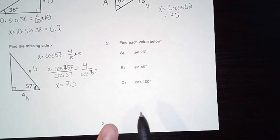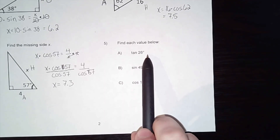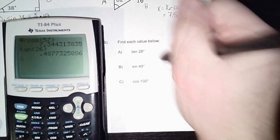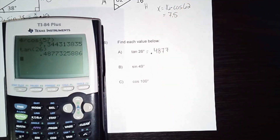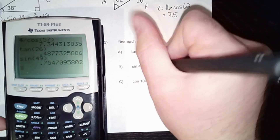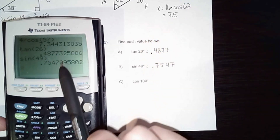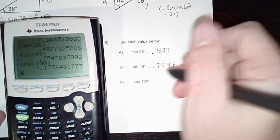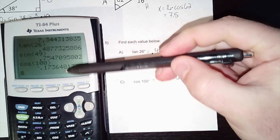For number 5, I need to find the value of each trig ratio directly using the calculator. Tangent of 26° — type it in — I'll give four decimal places. Sine of 49° equals 0.7547. Cosine of 100° gives a negative number: approximately negative 0.1736. I'm looking at the fifth decimal place to decide rounding. All three of these stayed the same, but you always check that next decimal place to see if it rounds up.